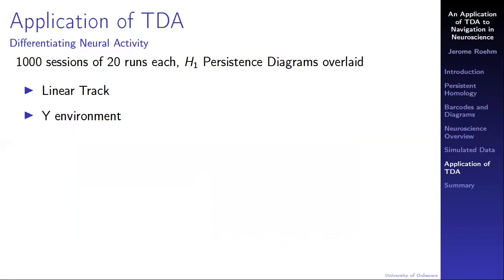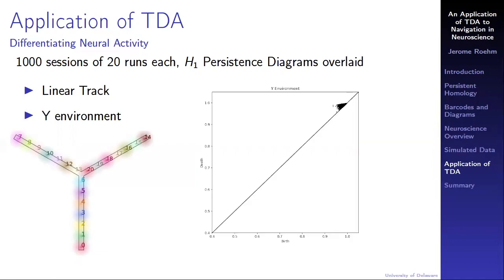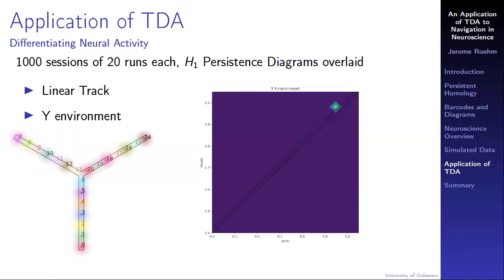Because my rodent lives in a computer and never gets tired, we can do the same thing for a scaled up Y environment, conducting 1,000 sessions of 20 runs each, computing the H1 persistent diagrams for each session and overlaying all of them. Again, the topological signature of an animal thinking about a Y environment is rather uninteresting.